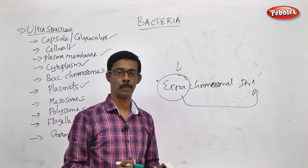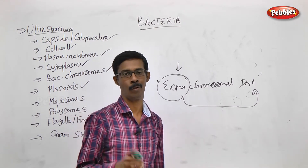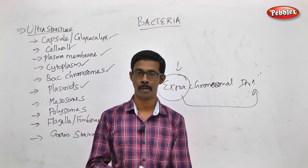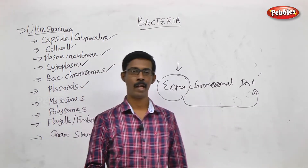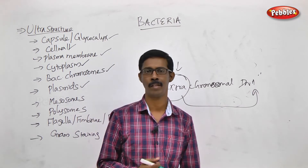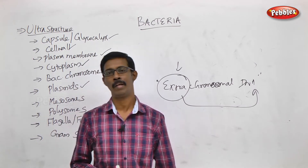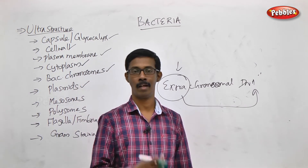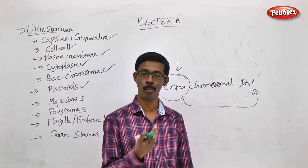In the Plasmid, the bacterial chromosome — they may code for some characters for the particular bacteria. That bacteria may have antibiotic resistance, toxin production, organic material, plants, root-inducing, or tumor-inducing properties.